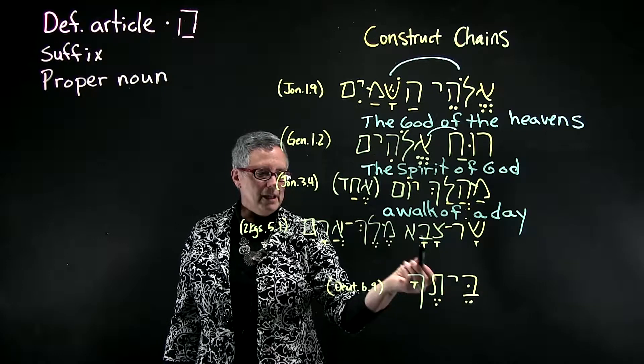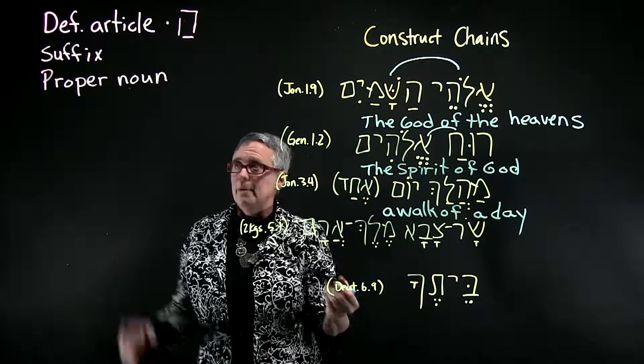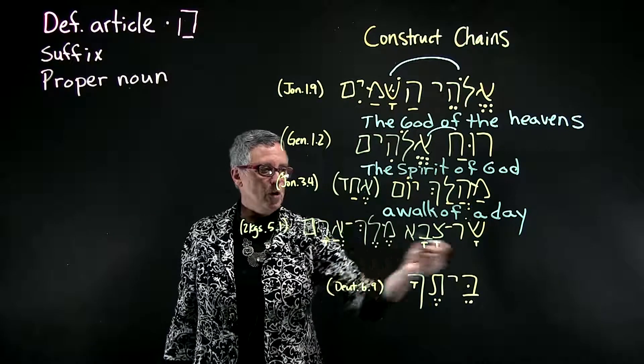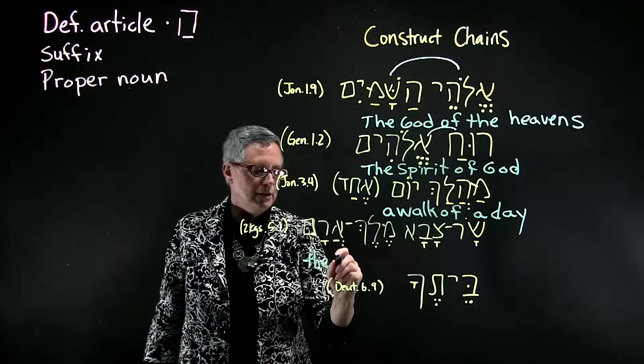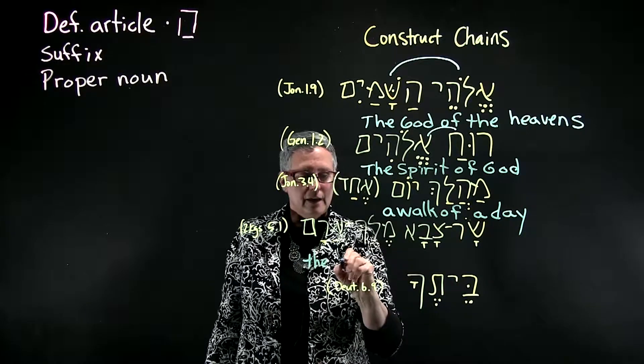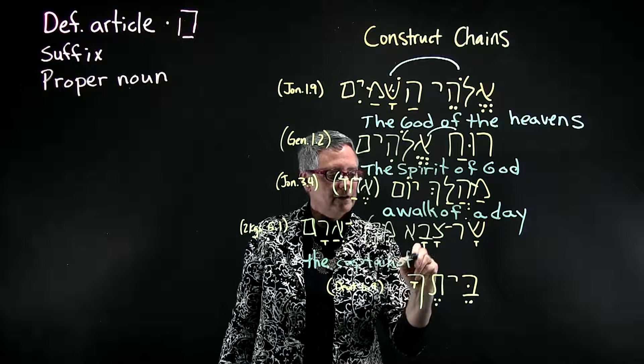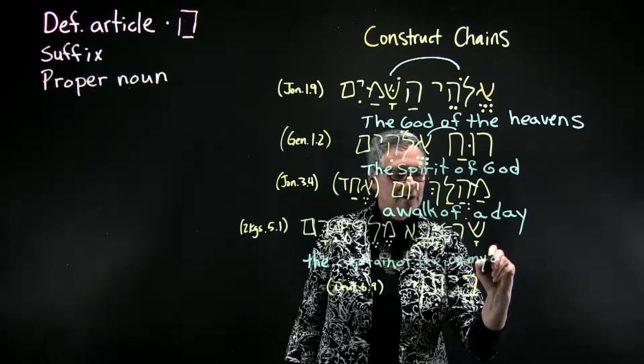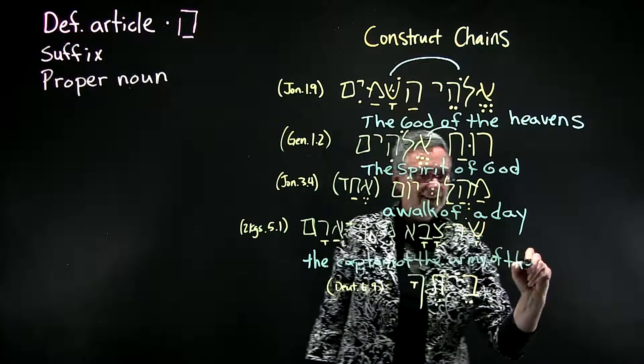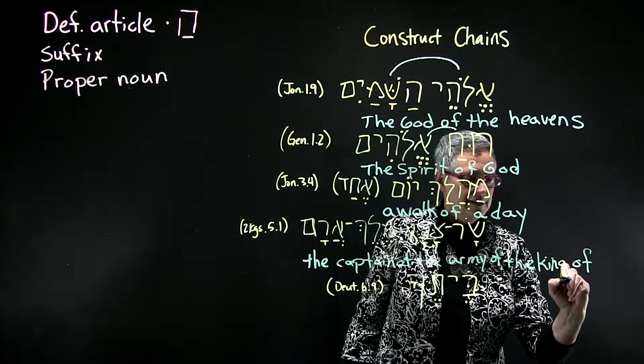Captain, army, king, and aram. Aram is a proper noun. So we know that this chain is definite. Therefore, the translation would be the captain of the army of the king of Aram.